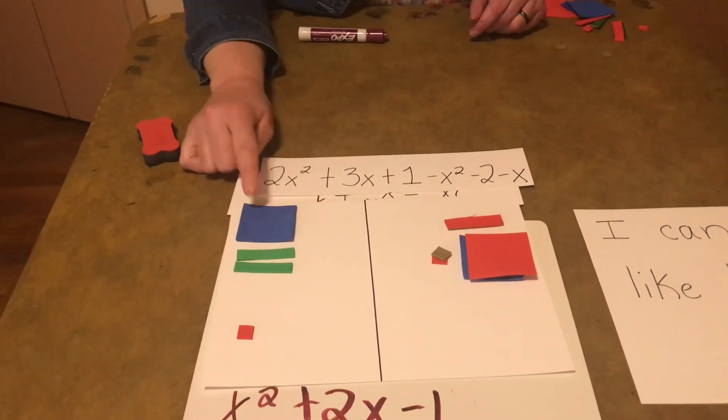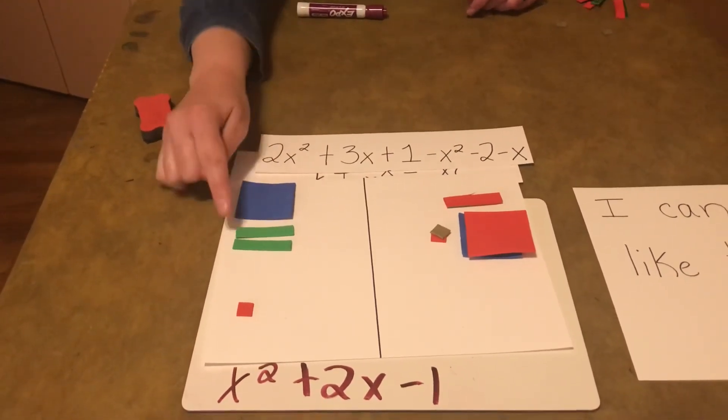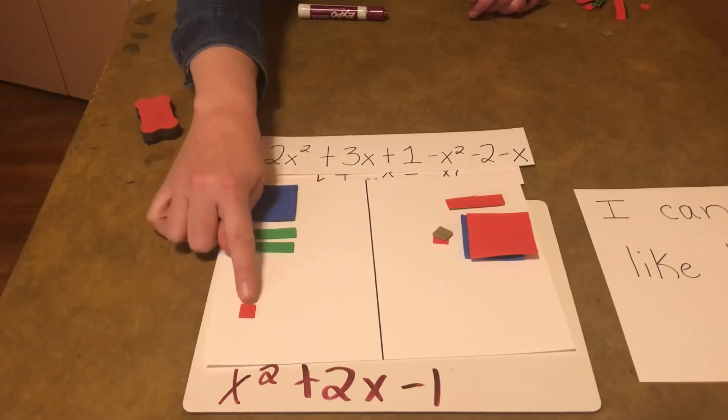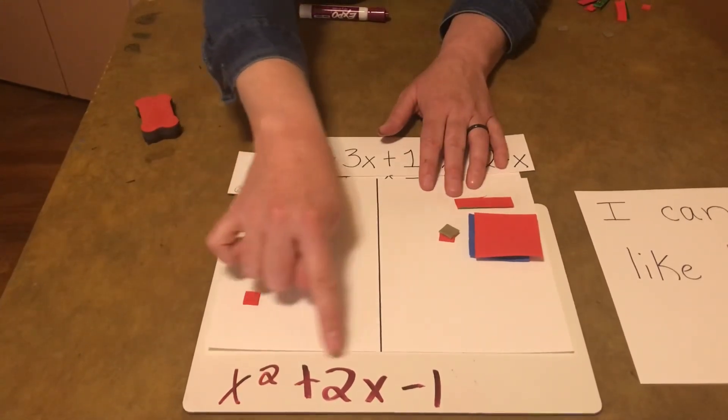We have, this is our X squared. So we have one of those. 1X² plus 2X minus 1. So X² plus 2X minus 1. We got it. That's awesome.